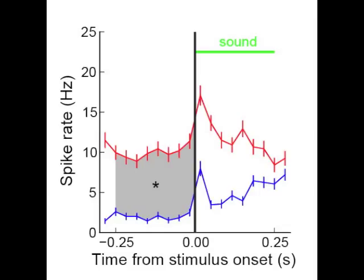In fact, we found something very different. Neurons started firing more even before we played the mixture of sounds, depending on which of the two sounds the rat was about to select. Here's an example. This is a plot of the activity of a single neuron in A1.